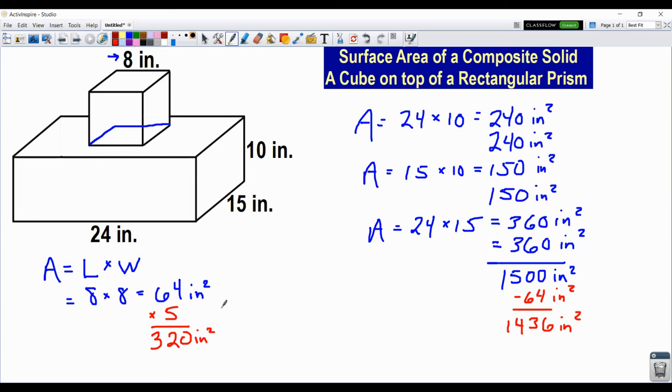All right. So ladies and gentlemen, we have our two numbers. We have the paint for the cube. We have the paint for the rectangular prism. So let's add them together. I'm going to start with the bigger number. 1,436 plus 320 gives us, and we add down, 1,756 square inches of paint for our composite solid. Ladies and gentlemen, the lesson is over.